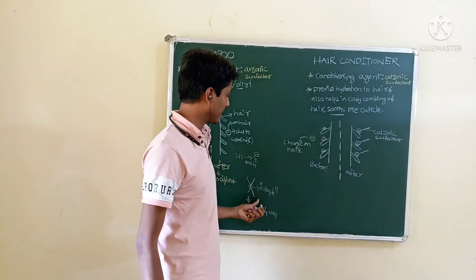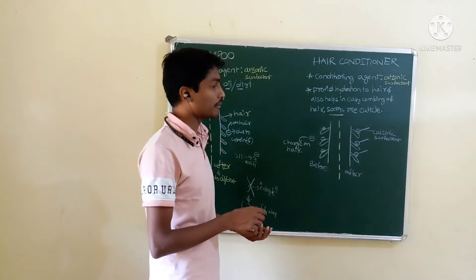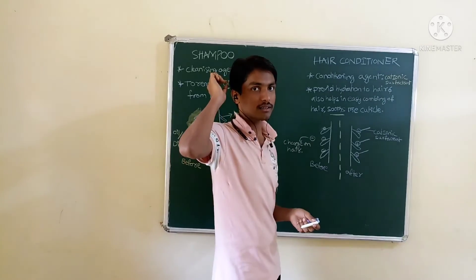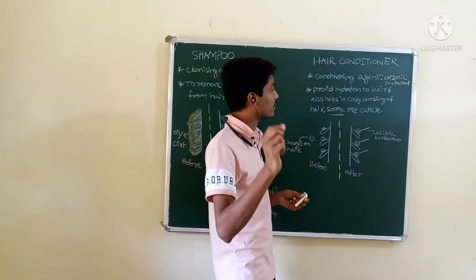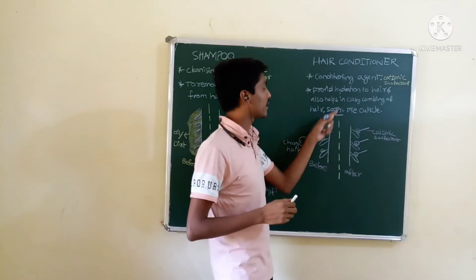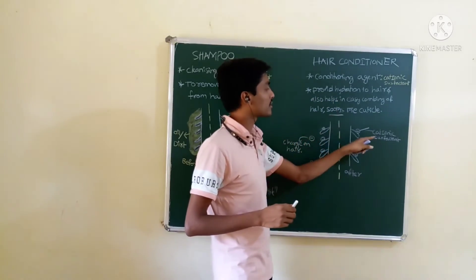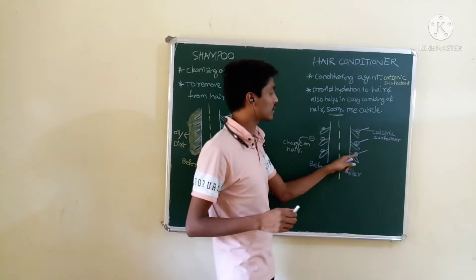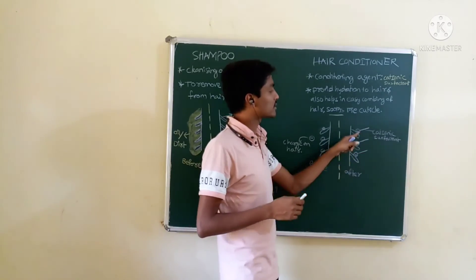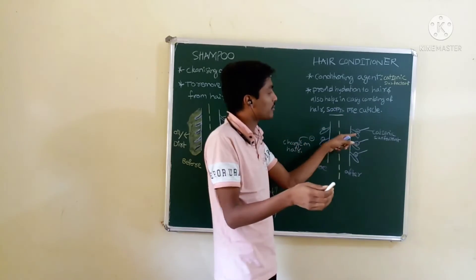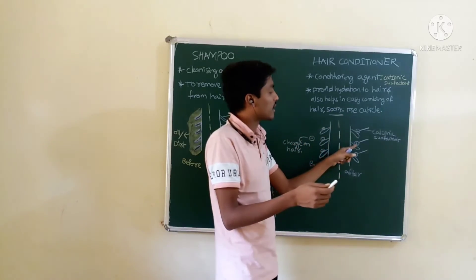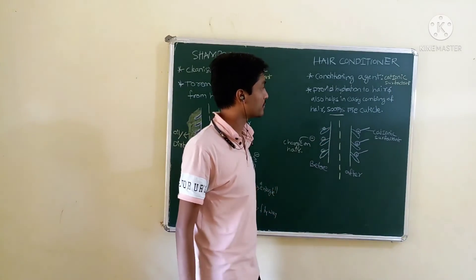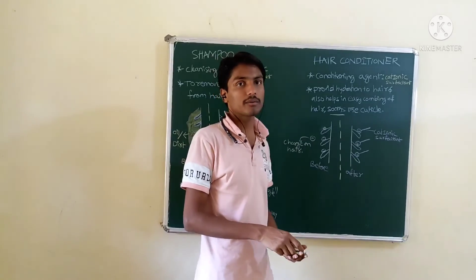We need to remove entanglement and the unmanageable fly-away condition by using hair conditioners. You can feel a smoothening effect on the hair due to hydration, and a soothing effect due to the cationic surfactant deposited on the hair. The cationic surfactant separates one hair from another, leading to easy combing. This is about shampoo and hair conditioner.